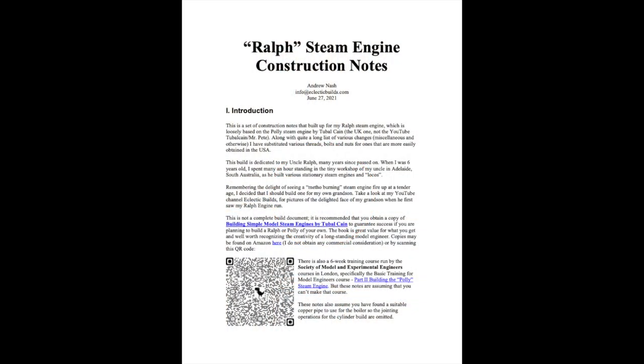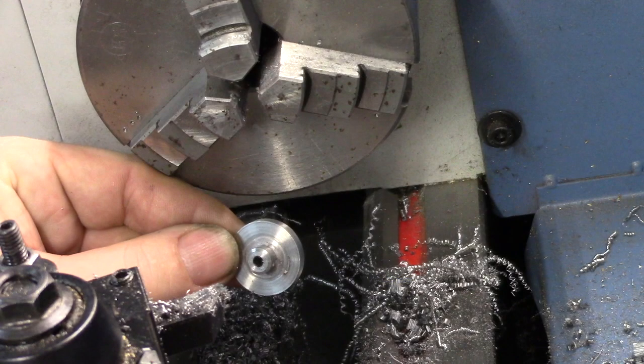Construction notes describing the part and the machining operations can be found at the Eclectic Builds website, listed in the description. The plate is shown here with a boss machined on one side. Sadly the earlier footage of the machining of this side was lost.